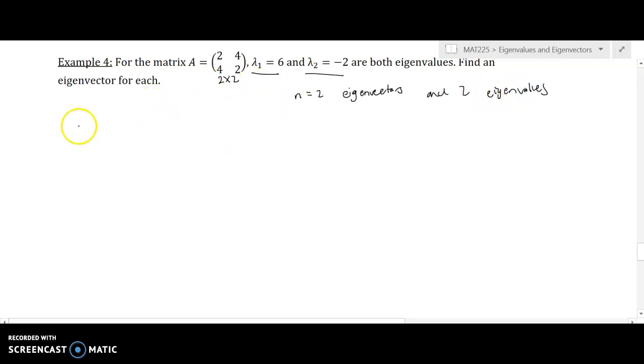And to find them, remember, we have to go back to the eigenequation, which says A times V equals lambda times V. So this is a matter of plugging in what we know and solving for what we don't.